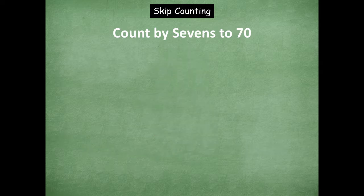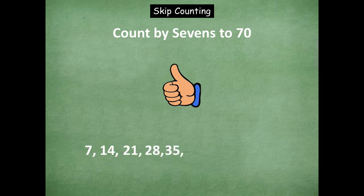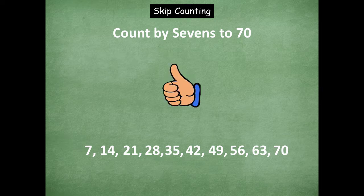Let's go to our sevens — counting all the way to seventy. Every time you skip count a number, put up a thumb. So if I skip count seven, fourteen, twenty-one and stop there, I know it's seven times three because I skip counted three times by seven. Here we go, counting up: seven, fourteen, twenty-one, twenty-eight, thirty-five, forty-two, forty-nine, fifty-six, sixty-three, seventy. Counting down: sixty-three, fifty-six, forty-nine, forty-two. Stop. Counting up: forty-nine, fifty-six, sixty-three, seventy. Awesome job, friends!